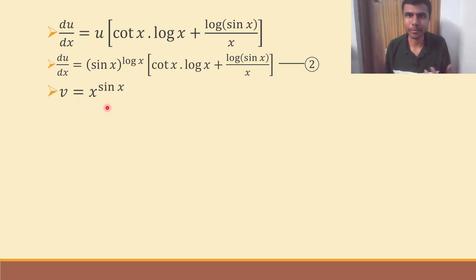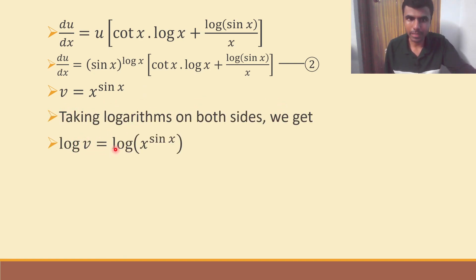Now, v is nothing but x power sine x. Same thing. Taking logarithms on both sides. We get log v is nothing but log of x power sine x. Now, same property. The sine x would come here. It's because log of a power m is nothing but m log a. So, this is what I get. Sine x into log x.